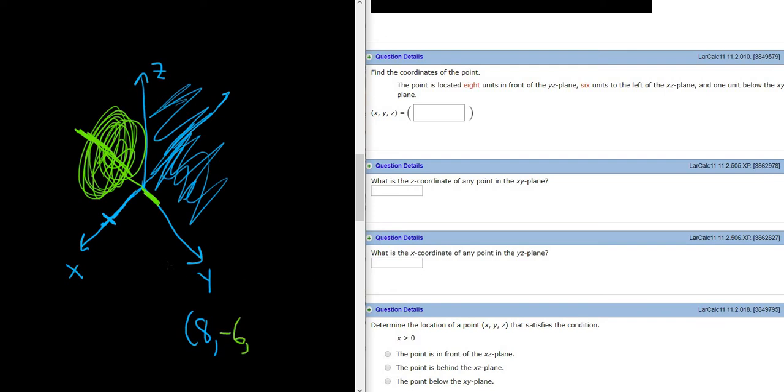And the last one is perhaps the easiest one to understand. One unit below the XY plane. So this here is the XY plane. So above the XY plane, you're on the positive Z axis. Below the XY plane, you're on the negative Z axis. So 1 unit below would be negative 1.